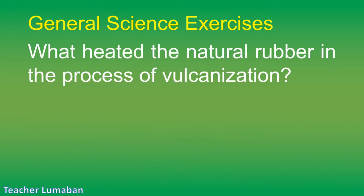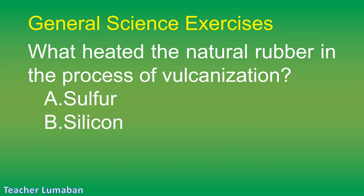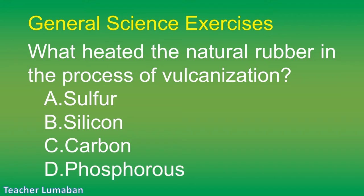What is natural rubber heated with in the process of vulcanization? Letter A: sulfur. Letter B: silicon. Letter C: carbon. Letter D: phosphorus.